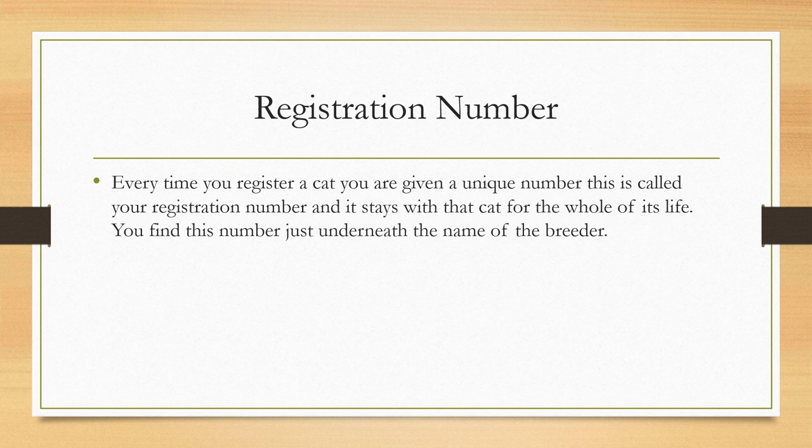Every time you register a cat, you are given a unique number. This is called your registration number and it stays with that cat for life. You will find this number just underneath your name as the breeder.